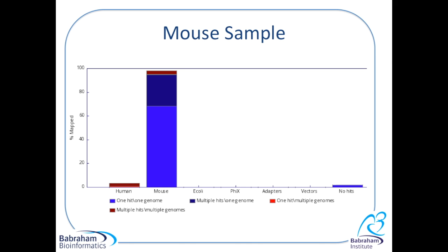So what I think we should conclude from this is that we are indeed looking at a mouse sample. The majority of reads map uniquely to the mouse sample and there are a few mouse-derived reads which also map to the human genome.